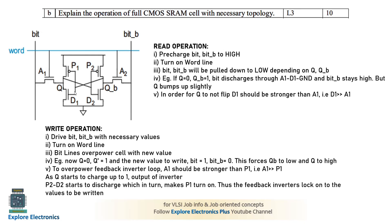Before the read operation, assume Q equals 0 and Q-bar equals 1 — that is the stored value. To read, we pre-charge both bit lines: bit equals 1 and bit-bar equals 1. Then the word line is made 1. When the word line is equal to 1, it applies voltage to the gates of A1 and A2, turning them on. With Q equal to 0, the inverter input is 1.